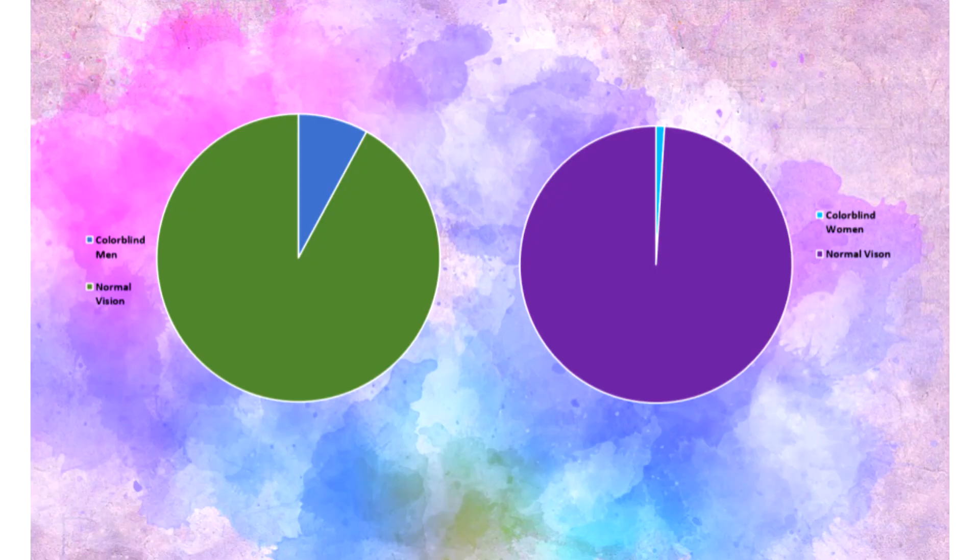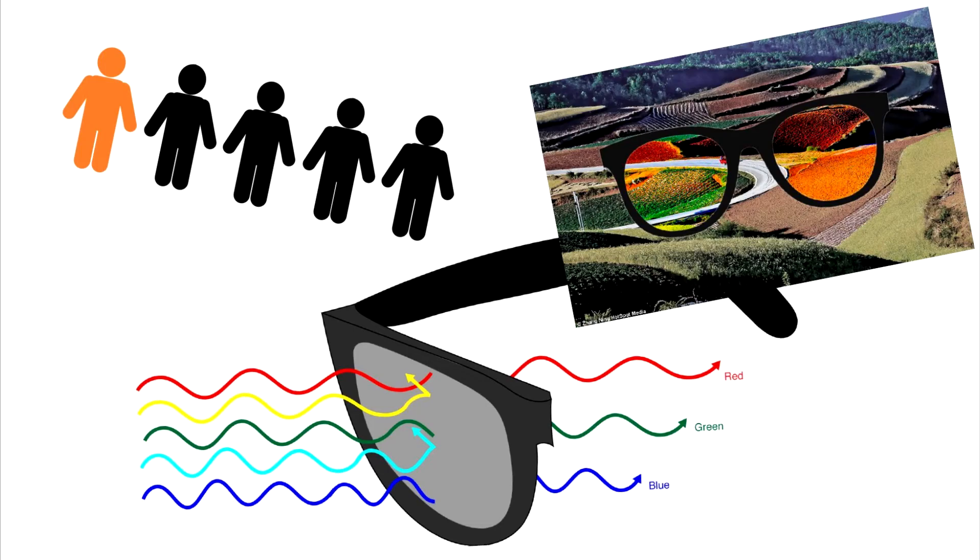Colorblindness affects all genders, but not equally. 8% of males have colorblindness, while only 1% of females have it. Currently, there is no complete cure for genetic colorblindness, but there are special lenses called N-chroma glasses that allow 4 out of 5 colorblind people to be able to see most of the color spectrum.